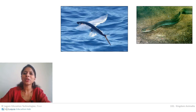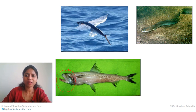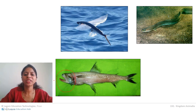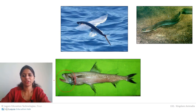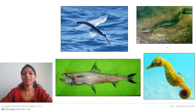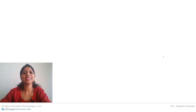Another example is the eel, which looks more like a snake than a fish. There is also the Bombay duck, which has a very large jaw that can open to twice or three times its original size, allowing it to capture larger prey. Finally, the sea horse is a beautiful fish found in coral regions that blends in with the coral and looks more like a horse than a fish.